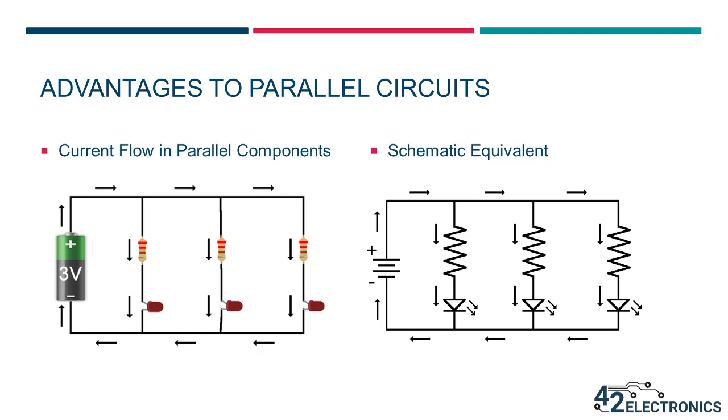So, looking at the image on the left, a 3-volt battery will provide 3 volts of power to each resistor LED set. Therefore, running circuits in parallel essentially makes the full battery voltage available across multiple paths.